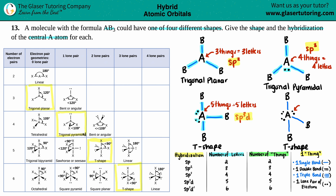For the last shape, you can probably guess: one thing for the first single bond, one for the second, three, four, five, and six things. Six things means six letters — that's sp3d2. And we are done.